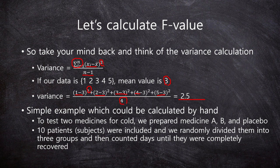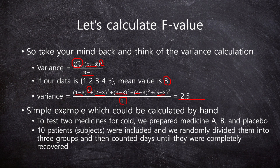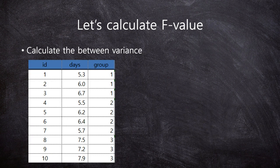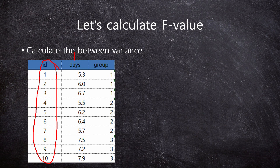Our example is as follows. To test two medicines for a cold, we prepared three conditions: Medicine A, Medicine B, and placebo. A total of 10 subjects were included and randomly assigned into the three groups. We then counted the days until they were completely recovered. The number of days is used as the dependent variable. This is the screenshot of Excel showing our 10 patients, with the dependent variable (days) and the independent variable (group): group 1 is Medicine A, group 2 is Medicine B, and group 3 is placebo.